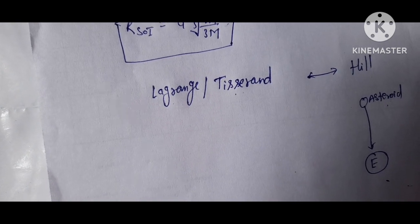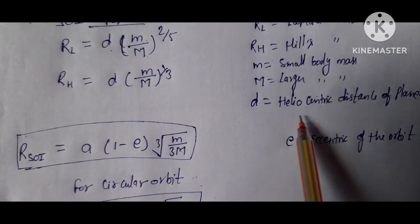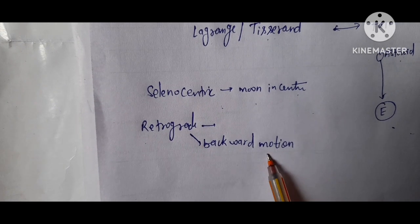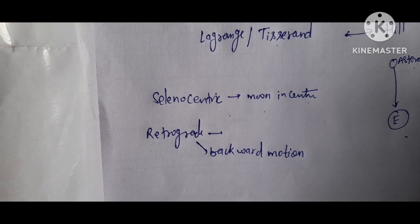So here two terms: selenocentric and retrograde. Selenocentric means moon in the center and heliocentric means sun in the center. And what is retrograde? Backward motion. It is not real, it is only apparent motion because of planet positions. It will be known as retrograde.